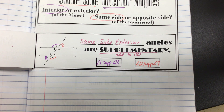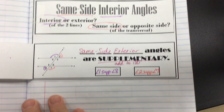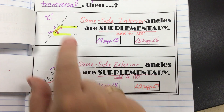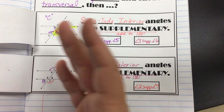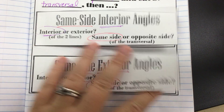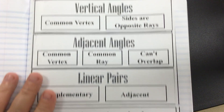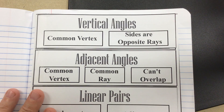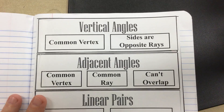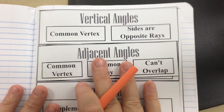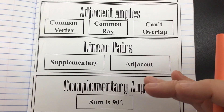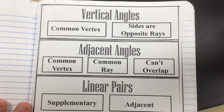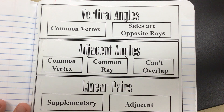I don't have a cool mnemonic for same side exterior angles. Like I said, same side interior angles make a C, but I don't really have anything for same side exterior. If you think of something, let me know or jot it down for yourself. These angles on the last page have nothing to do with parallel lines — whatever we say about vertical, adjacent, linear pairs, complementary, and supplementary, you do not have to have parallel lines in the picture for any of these to be true.